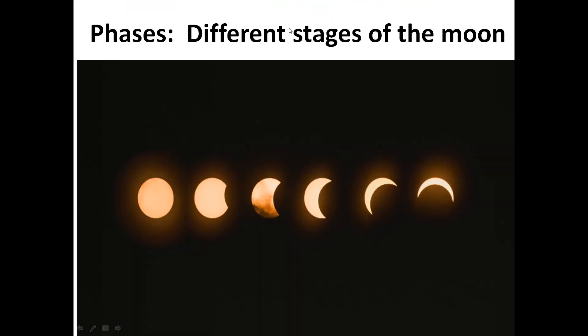Phases: Different stages of the moon. Throughout the month we see different stages of the moon. We see different shapes of the moon in the sky. So this is an example of the phases of the moon.